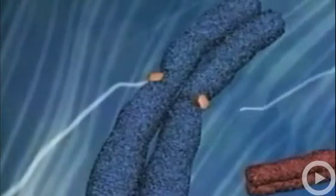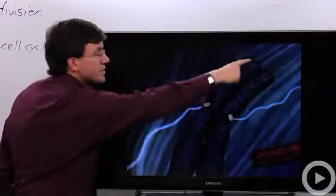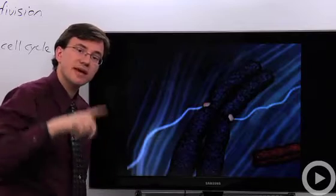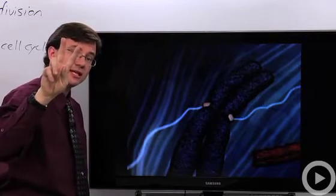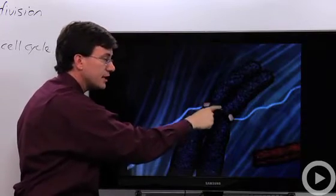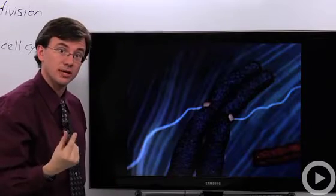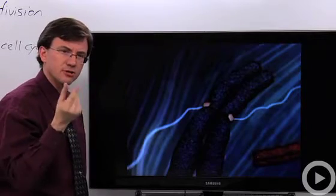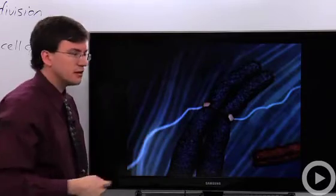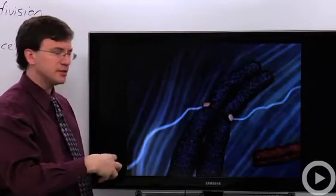Here's a spindle fiber attaching to that part of the chromosome and to this part of the chromosome. Let's pause it right here because this is an important thing. This chromosome here is actually made out of two separate DNA molecules. Now they are held together at this place right here called the centromere, which means literally the center part.